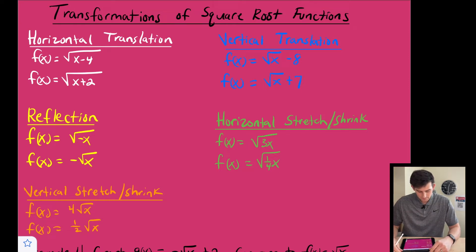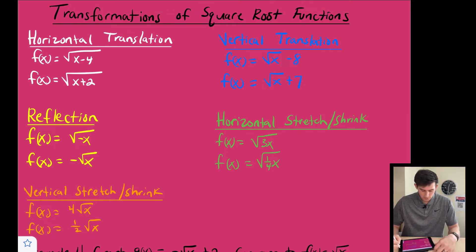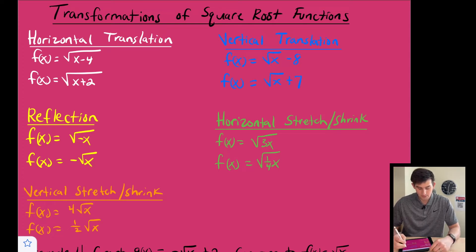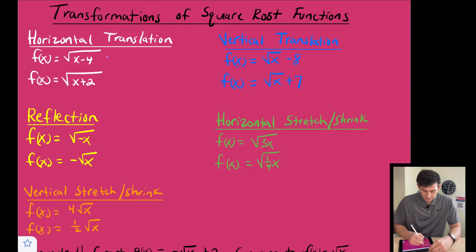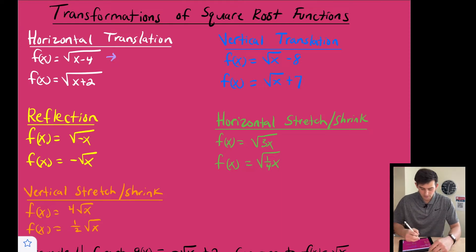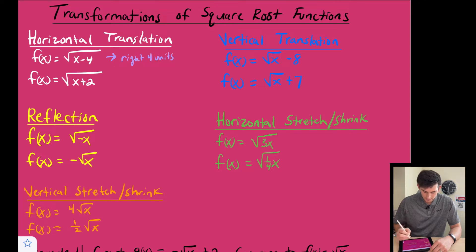We have horizontal translation, shown here in white. The first one is f(x) = √(x − 4). That minus four inside or under the radical is going to tell us to shift right four units.